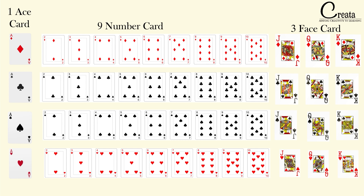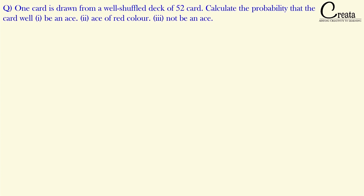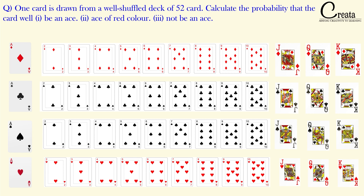So you have understood the concept of the card. Let's take a question on probability related to cards to show the implementation of the concept. This question is NCERT example number 4, and we have slightly modified the question — we have added one extra part. The question is: one card is drawn from a well-shuffled pack of 52 cards. Calculate the probability that the card will — it has three parts. Part 1: be an Ace. Part 2: be an Ace of red color. Part 3: not be an Ace.